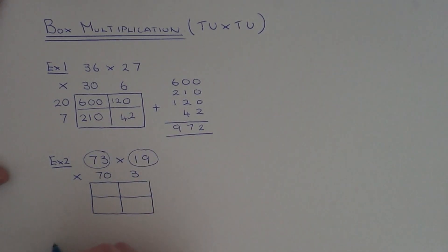The second number is 19. So if we write this down the side, we've got 1 ten which is 10 and we've got 9 units. So again we just need to work out what these four numbers are now.